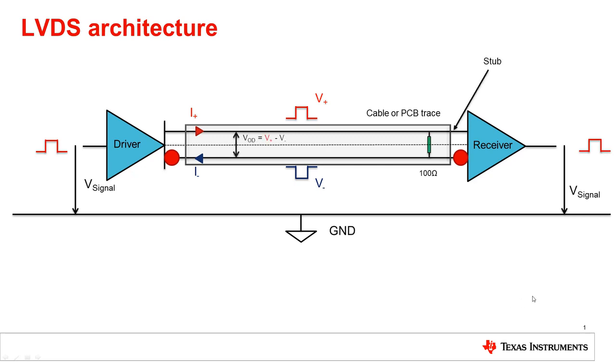This termination resistor, as well as the LVDS driver current, is what generates the differential voltage. This resistor must match the characteristic impedance of the transmission line. Typically it will be 100 ohms. The resistor creates a stub in the transmission line, which can cause reflections. So the resistor should be placed as close to the receiver as possible to minimize the stub length.